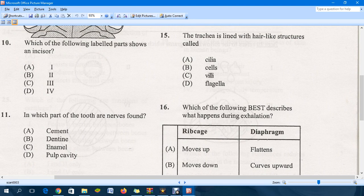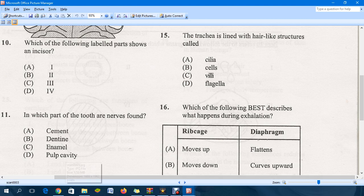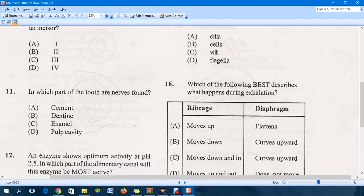In which part of the tooth are nerves found? The answer for question 11 would be the pulp cavity. So that is D. Definitely not the cement, not the dentine, nor is it the enamel.